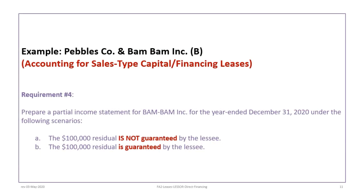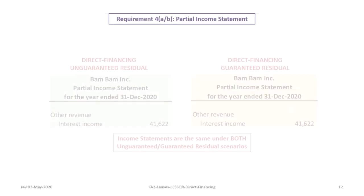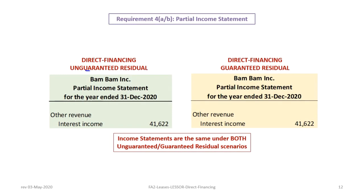The final requirement is to prepare a partial income statement for BamBam for the year ended December 31, 2020, shown under both guaranteed and unguaranteed scenarios. They are exactly the same. There is no sales revenue, no cost of goods sold, and no gross profit — those only occur under a sales type lease. All that is reported is interest income as other revenue, which is what the Leasor earns from leasing the equipment. The income statements are identical under both residual scenarios.